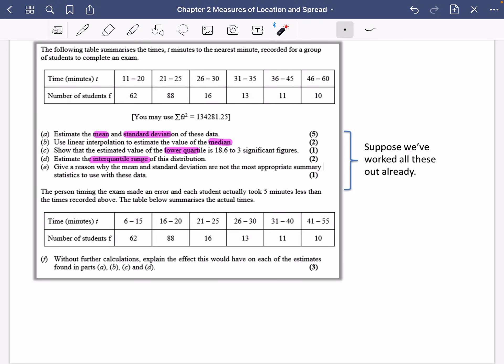So it says for part F, the person timing the exam made an error and each student accidentally took five minutes less than the times recorded above. The table below summarises the actual times. So what they've done is they've taken the original times and they've subtracted 5. So I guess if we were going to do some coding, we could have said that the new time was equal to the old time, subtract five. And it says without further calculations, explain the effect this would have on each of the estimates found in A, B, C, D.